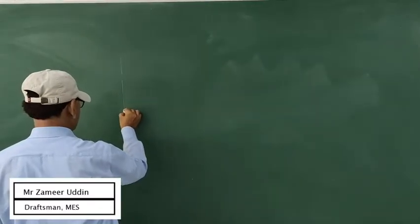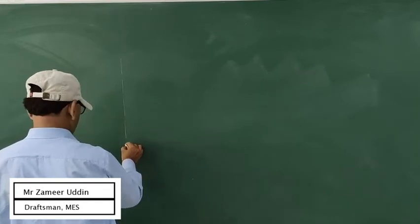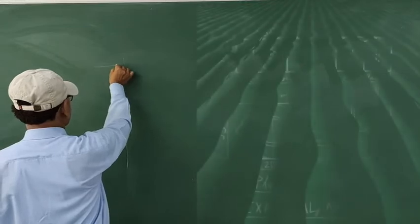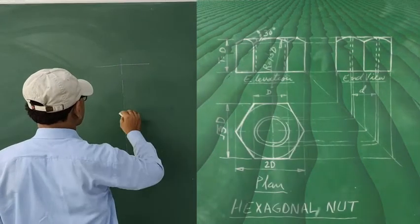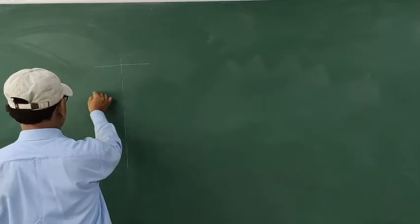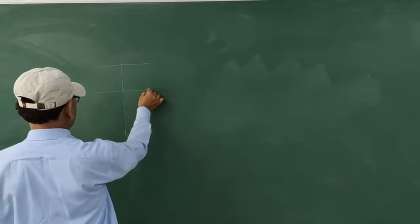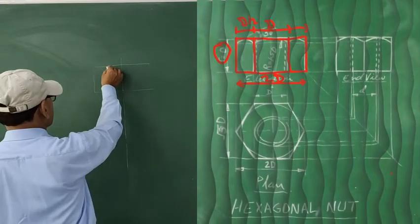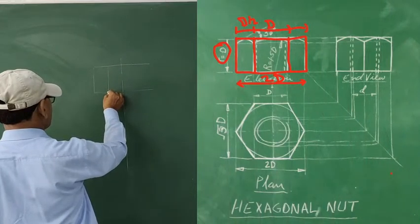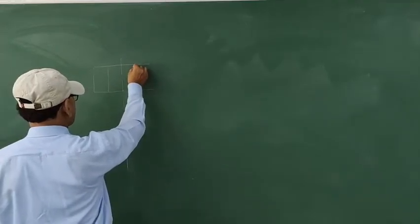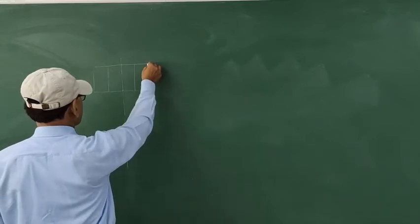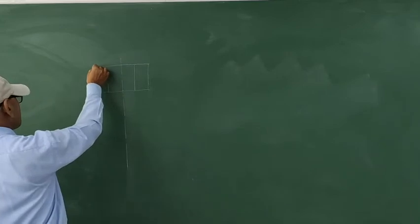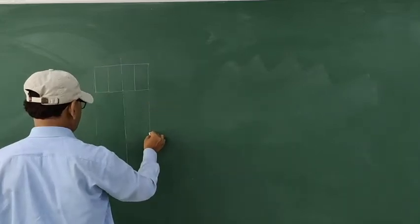We will start with the center line as shown in the figure — always try to start a figure with the center line. Then draw a rectangle of dimensions 2d by d, where the length is 2d and the height is d. This rectangle is then divided into three parts: d/2, d, and d/2, as shown in red on the right-hand side. This rectangle represents the elevation.